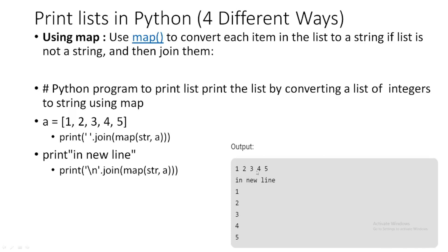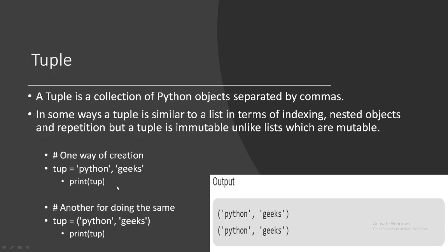If you want to print the elements each on a new line, you can use map(str, a) with sep='\n' or '\n'.join(map(str, a)) to print each item on a new line.